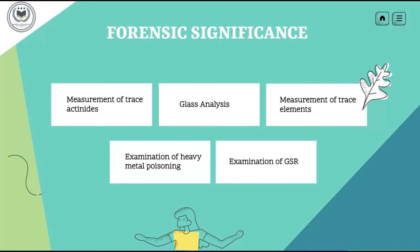ICP-MS is also used to measure and examine all the trace evidence retrieved from the crime scene for further detection of composition and matching with the control sample. One of the largest volumes of use for ICP-MS is in the medical and forensic field, specifically toxicology. An expert may order a metal assay for a number of reasons, such as suspicion of heavy metal poisoning, metabolic concerns, and even hepatological issues.